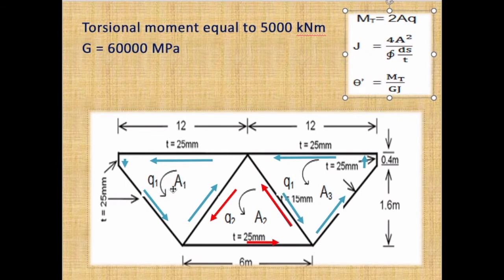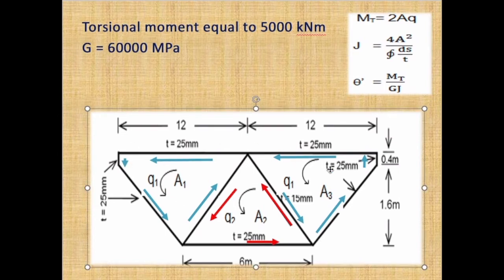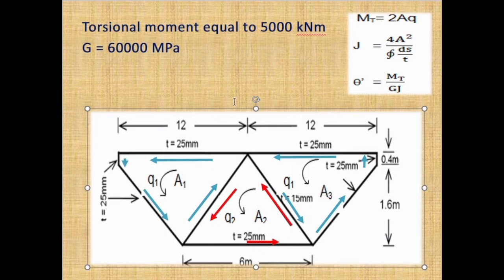Before going to the calculation, we have to understand the picture first. The dimensions given are 12 meters, 12 meters, 1.6 meters, and 6 meters. We first check whether the shape is symmetric — and it is symmetrical. There are three panels: panel 1, panel 2, and panel 3. Because it's symmetric, the area of panel 1 equals the area of panel 3, and the flow in panel 1 equals the flow in panel 3.